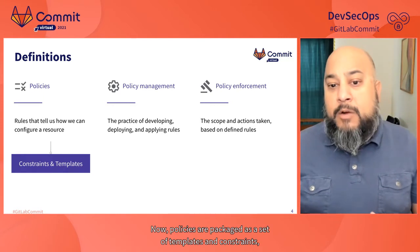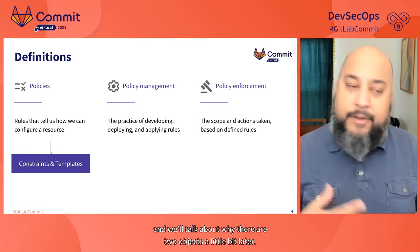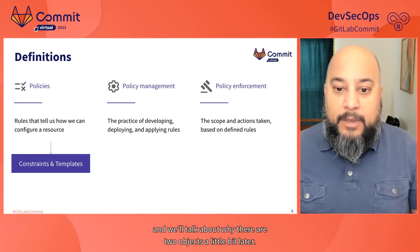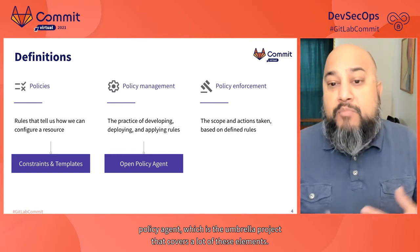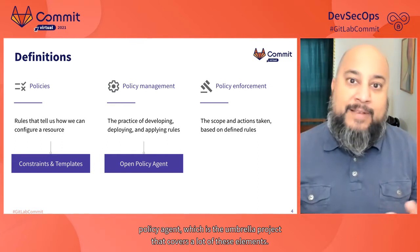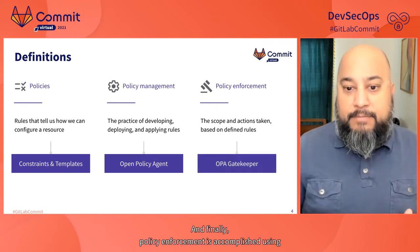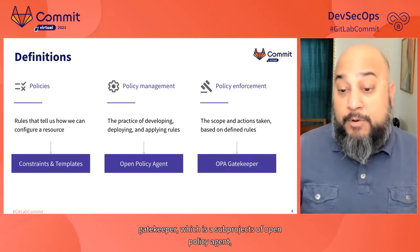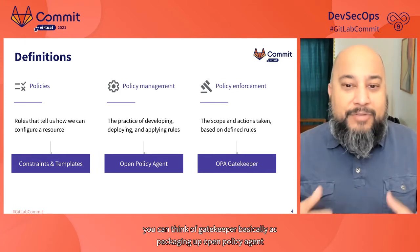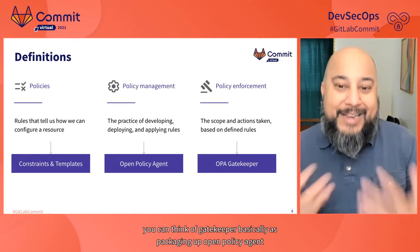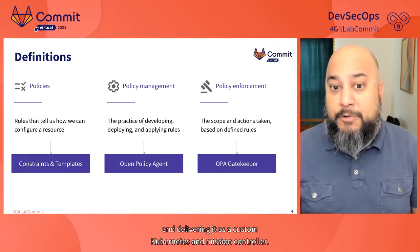Policies are packaged as a set of templates and constraints — we'll talk about why there are two objects a little bit later. Policy management is handled by Open Policy Agent, which is the umbrella project that covers a lot of these elements. And policy enforcement is accomplished using Gatekeeper, which is a subproject of Open Policy Agent. You can think of Gatekeeper as packaging up Open Policy Agent and delivering it as a custom Kubernetes admission controller.